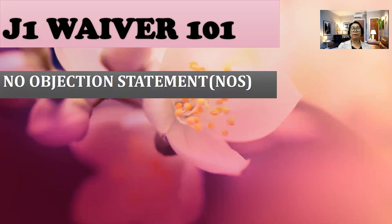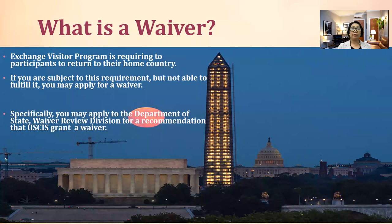I'm going to explain to you the process of securing a waiver or no objection statement from your home country. A waiver in the exchange visitor program requires participants to return to their home country. That is one of the laws in the United States and probably in your respective home country. But there is a possibility to waive that by getting a waiver from the United States USCIS. If you are subject to this requirement but you cannot go home or you ought not to go home for two-year residency, then you need to explore the possibility of getting a waiver.